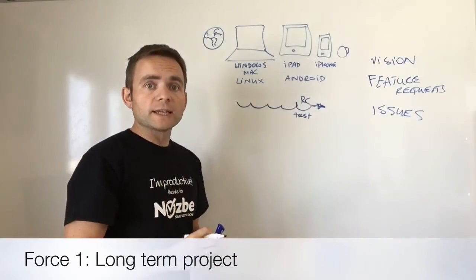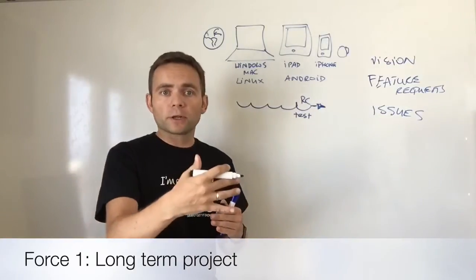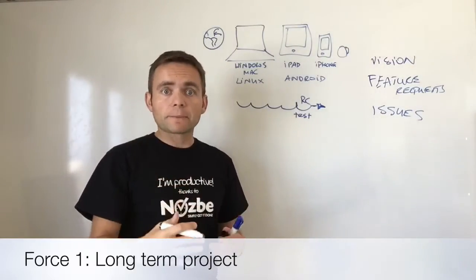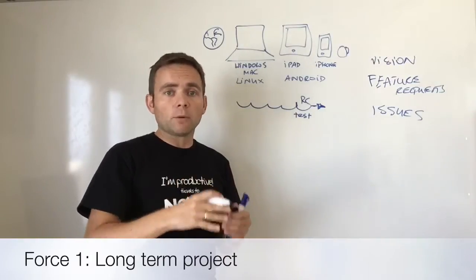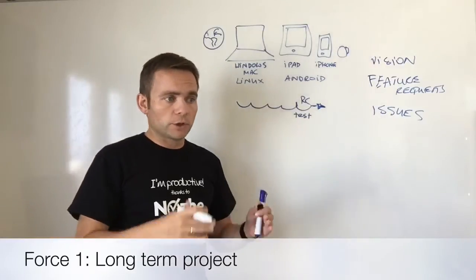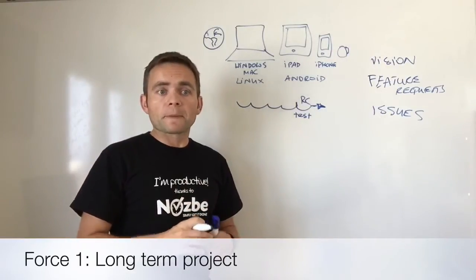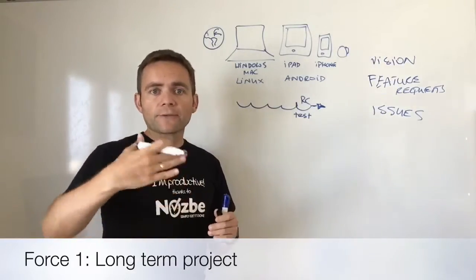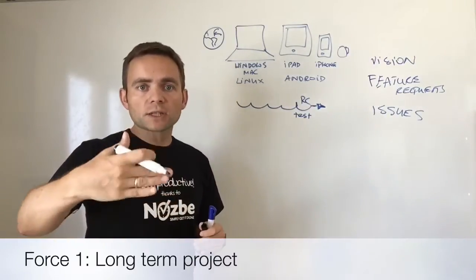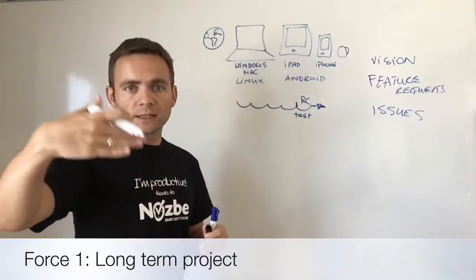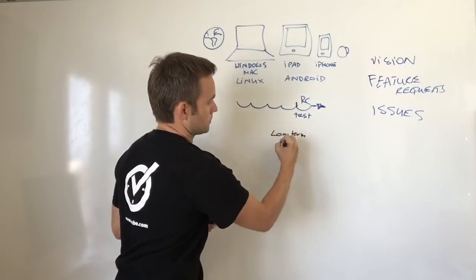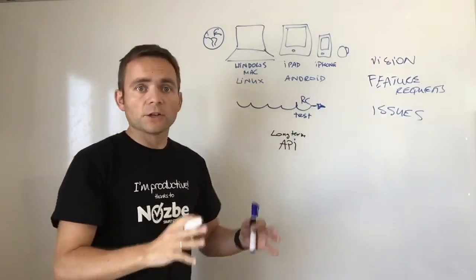First force is a long-term project. For example, we might have a long-term project right now, for example, API. We are working on a new API that will help us get connected with other services. We've been working on this for quite a while now, but we have to work on it every month to make sure that we advance and we use it, and we're ready to release it at some point. So the long-term API is one of the forces.